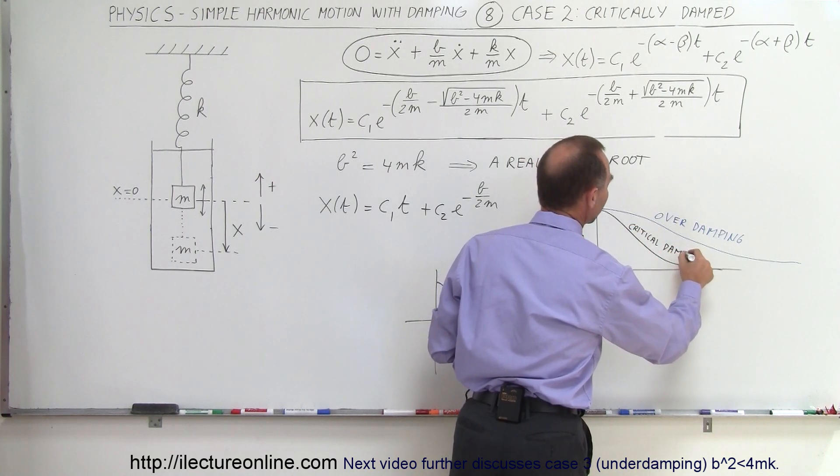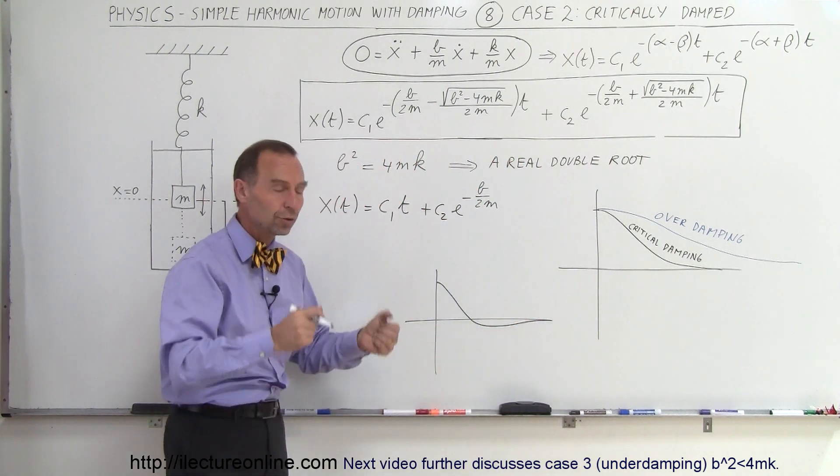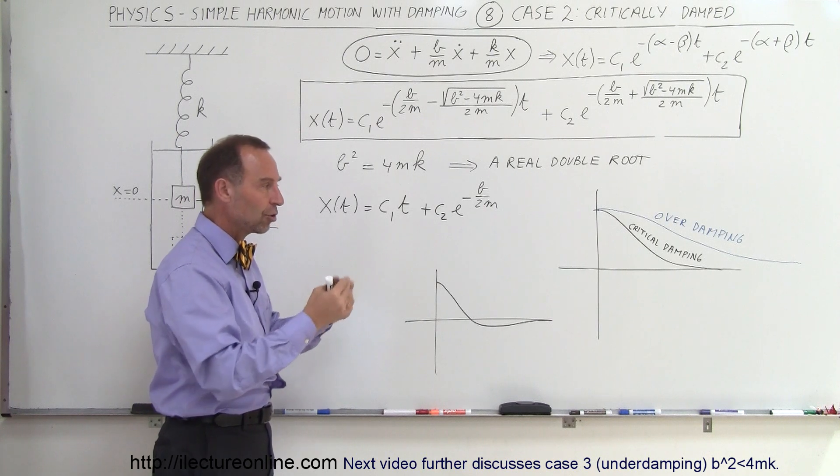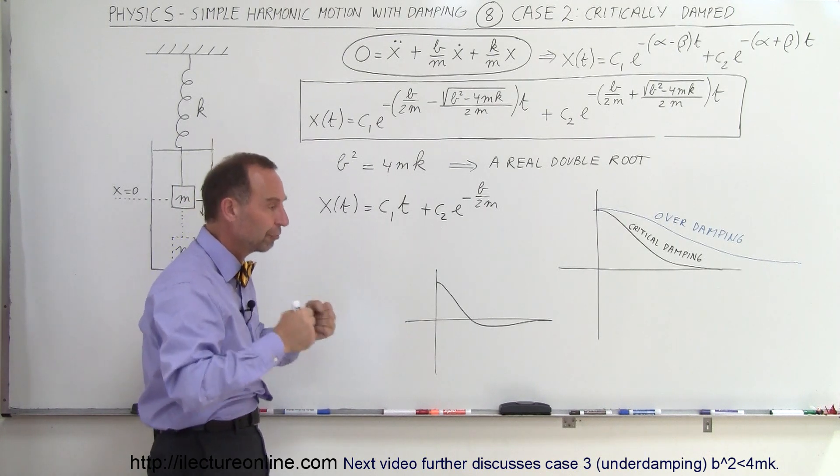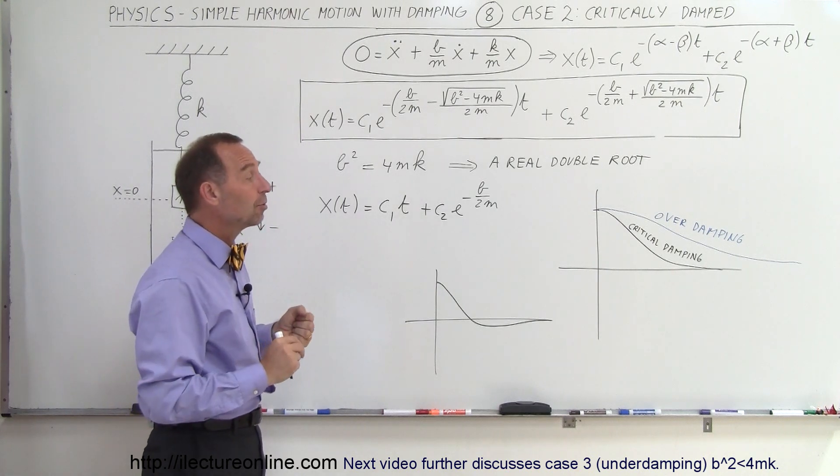A practical solution for this would be, for example, the springs on your car. Let's say you're driving on the road, you hit a bump, you hit a pothole or something like that and the springs on your car are supposed to get your car back to the equilibrium position. So first the car will kind of bump up and then you want to get back to the equilibrium position.